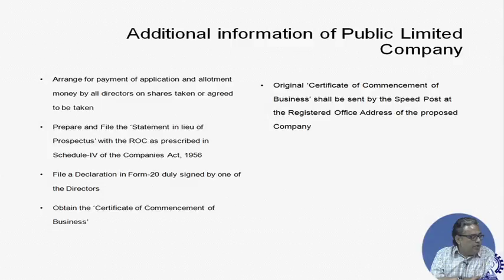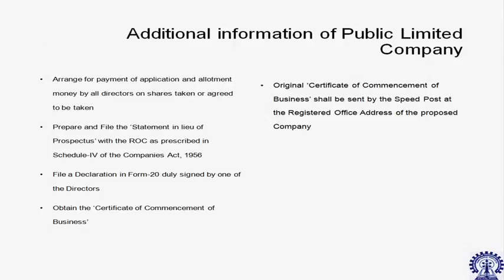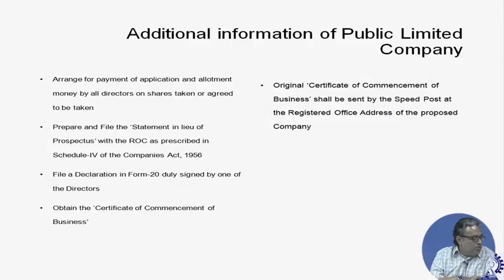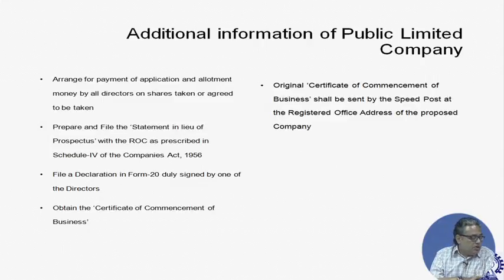Additional steps include arranging payment for the application and allotment of money by all the directors or shareholders. If you are going for public subscription or an Initial Public Offer, you should prepare a statement in lieu of prospectus. Even if you are going for a private placement, you should also prepare that. You should then file a declaration in Form 20 by one of the directors confirming that everything has been carried out properly, and you need to have a commencement of business certificate in the case of a public limited company.